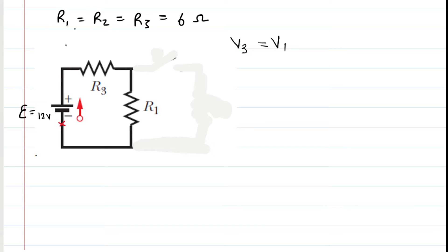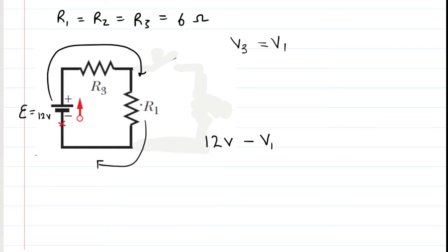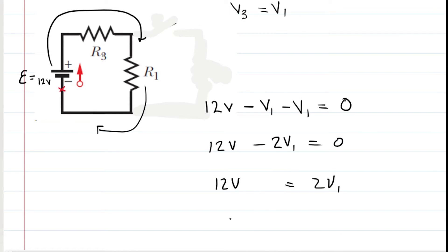Starting at the negative terminal and going clockwise: going from negative to positive terminals is an increase of 12 volts. We pass through R3, giving a drop of V3, which we substitute as V1. Then through R1, another drop of V1. Setting potential changes equal to zero gives 12 minus 2 times V1 equals zero. Solving, we get V1 equals 6 volts — the initial potential difference across R1 when the switch is open.